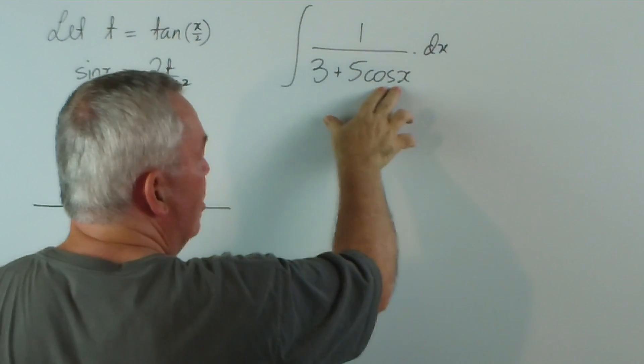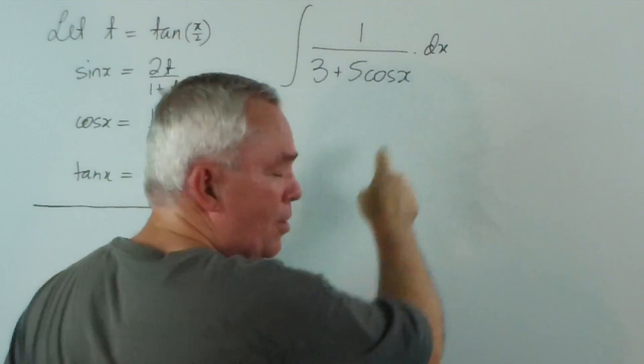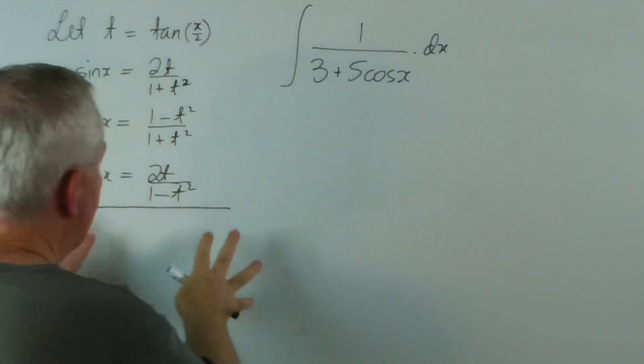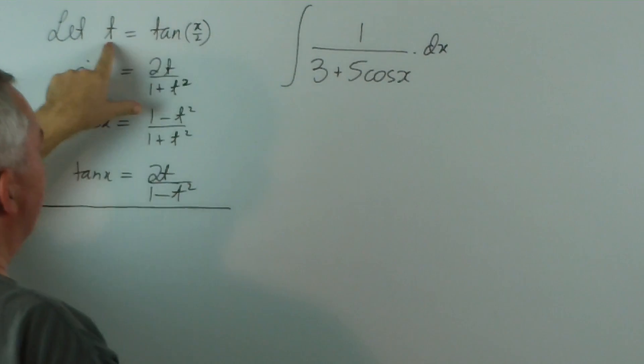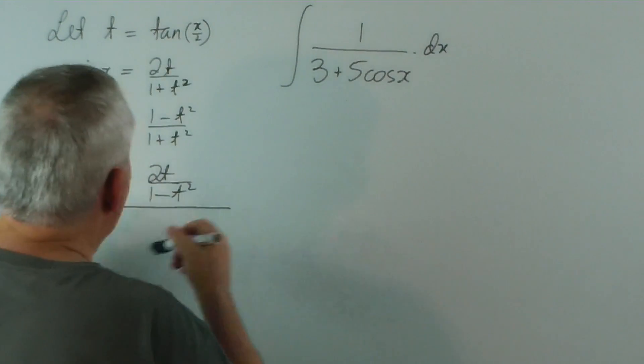Notice, I don't just have to substitute the cos of x, I've got to substitute the dx. So there's a further step required where we have to find the derivative of this to get a conversion from dx to dt. So let's do that first.